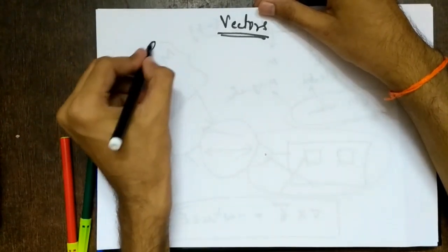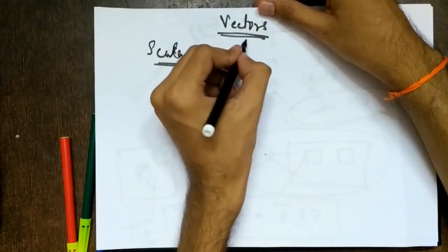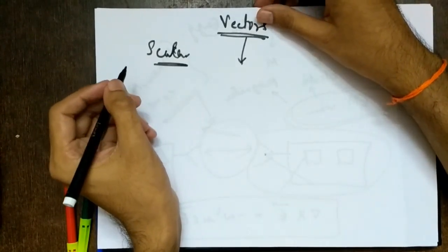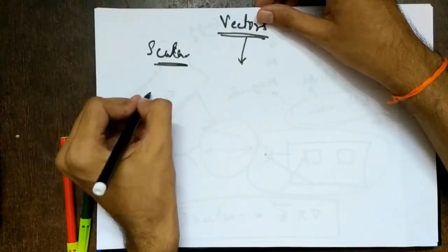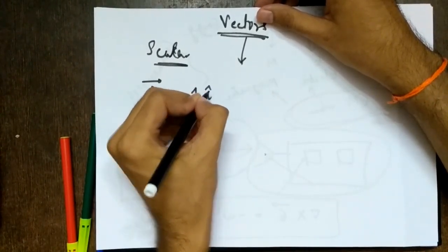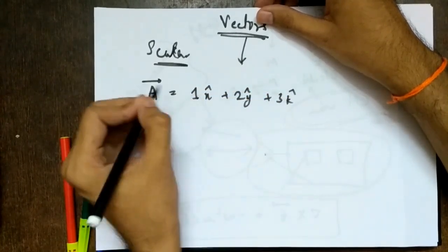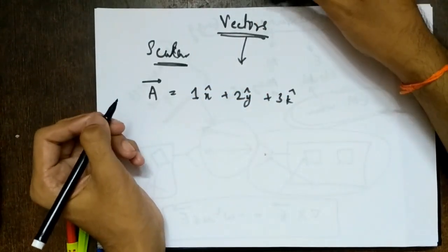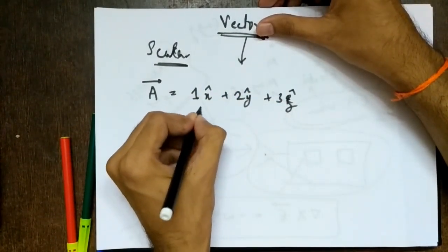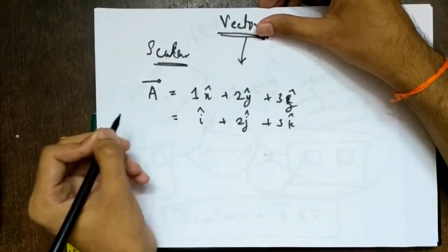What are vectors? We have two things: a scalar, which has only a magnitude and no direction, and a vector, which has both magnitude and direction. We have already studied this. So let's take a vector A — it is given as one x-cap plus two y-cap plus three z-cap. I am using the Cartesian coordinate system x, y, z. This is also written as i-cap plus two j-cap plus three k-cap — one and the same thing.